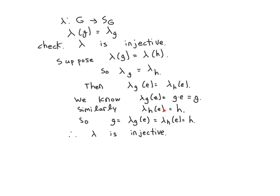Similarly, lambda sub H of E is H. So what do we have? We have G is equal to lambda sub G of the identity, is equal to lambda sub H of the identity, is equal to H. Assuming that two permutations were the same, their group elements they came from were the same. Ergo, lambda is injective.